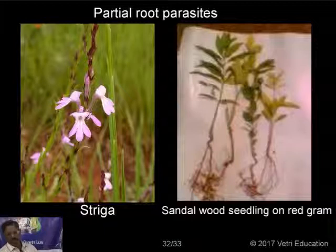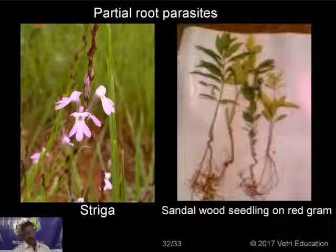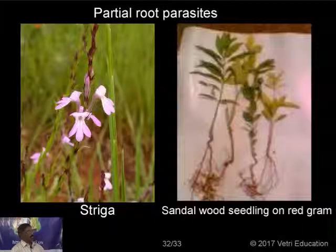So these are the characteristics and parts we learned today: root tip, zones in the root tip, functions of the roots, and root modifications of different types. Tomorrow we will go to the next topic regarding the stem and its details.